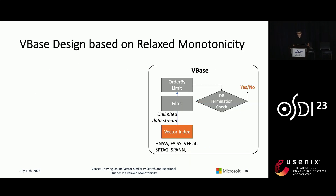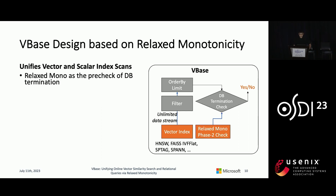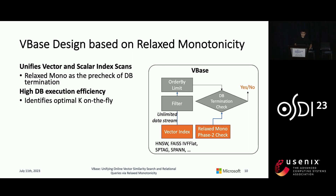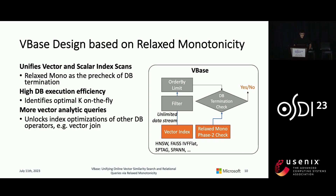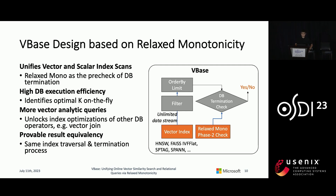We designed and built VBase based on this relaxed monotonicity. First, this allows VBase to unify vector and scalar index scans. Specifically, relaxed monotonicity is used as a pre-check on top of existing database termination checks. We found this unification based on relaxed monotonicity extremely powerful. It allows high database execution efficiency because one can identify the optimal K on the fly and terminate the query. It also unlocks more valid vector analytic queries that can be efficiently accelerated by the index scan primitive. Last but not least, we formally proved that VBase produces equivalent results to the top-K based solution with the optimal K, because relaxed monotonicity is only a re-abstraction of the ANN system and does not alter the index traversal behavior.